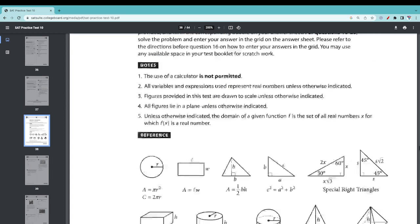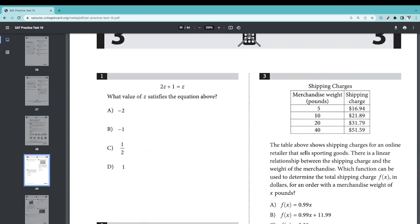Let's get started. What value of z satisfies the equation above? Let's subtract z from both sides, so we get z plus 1 equals 0, so z equals negative 1. It makes sense because negative 2 plus 1 is negative 1. The answer for number 1 is B.